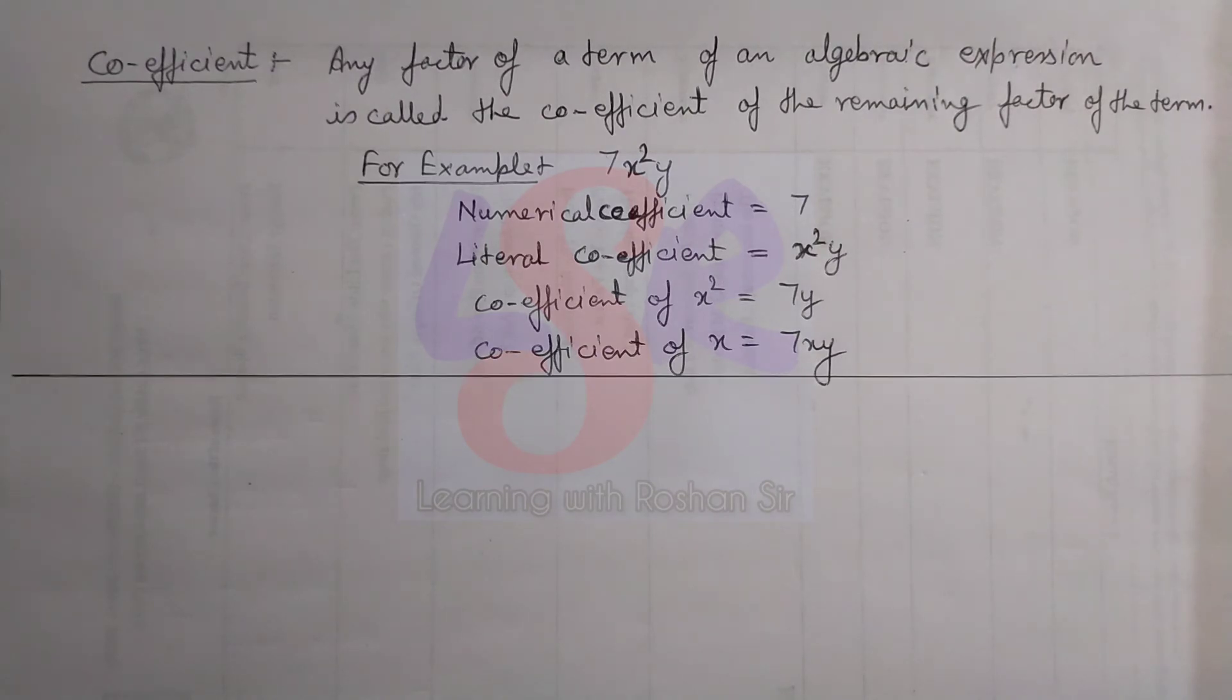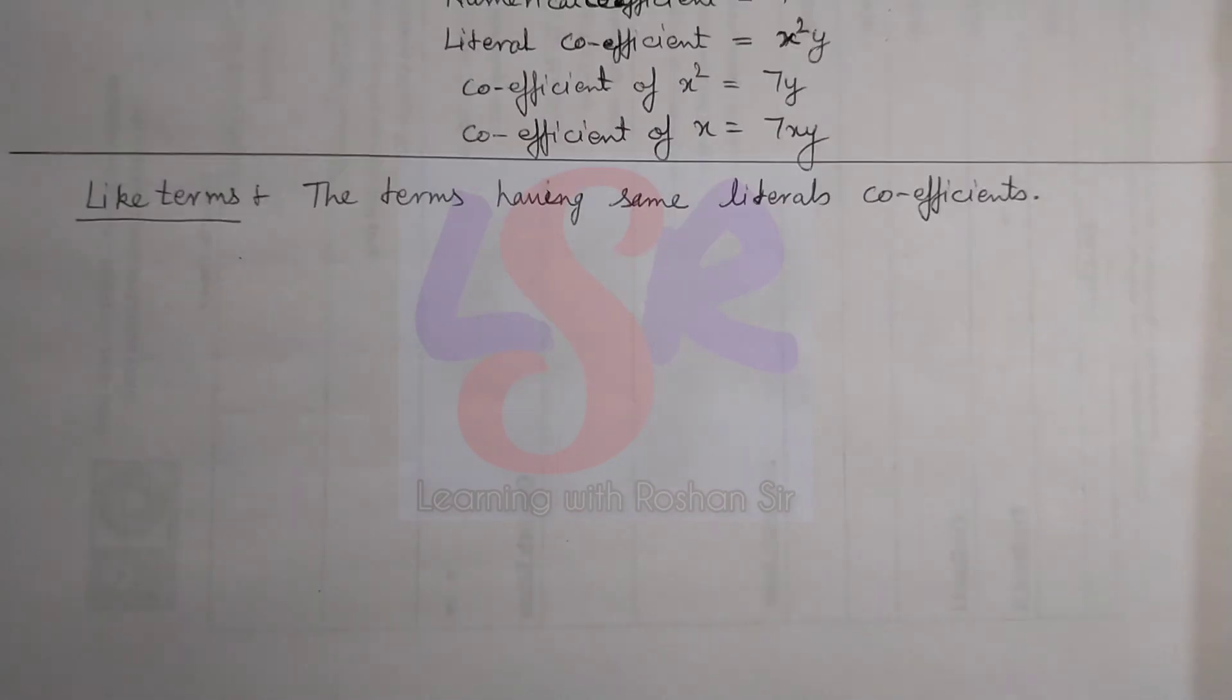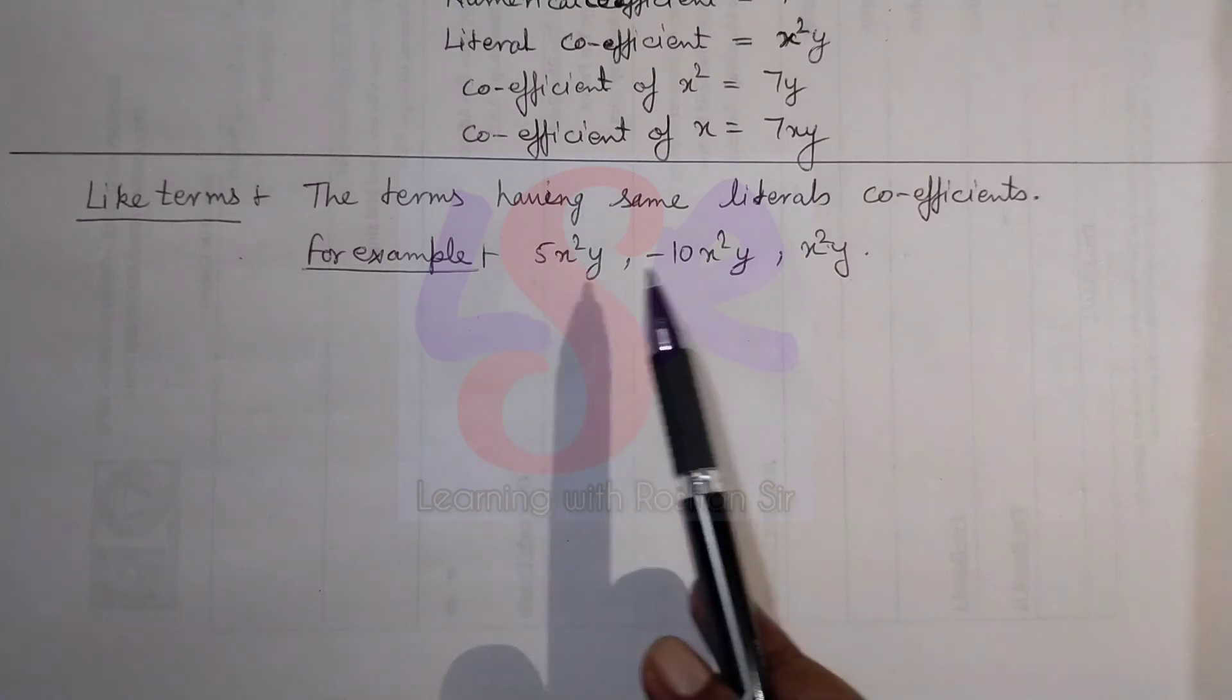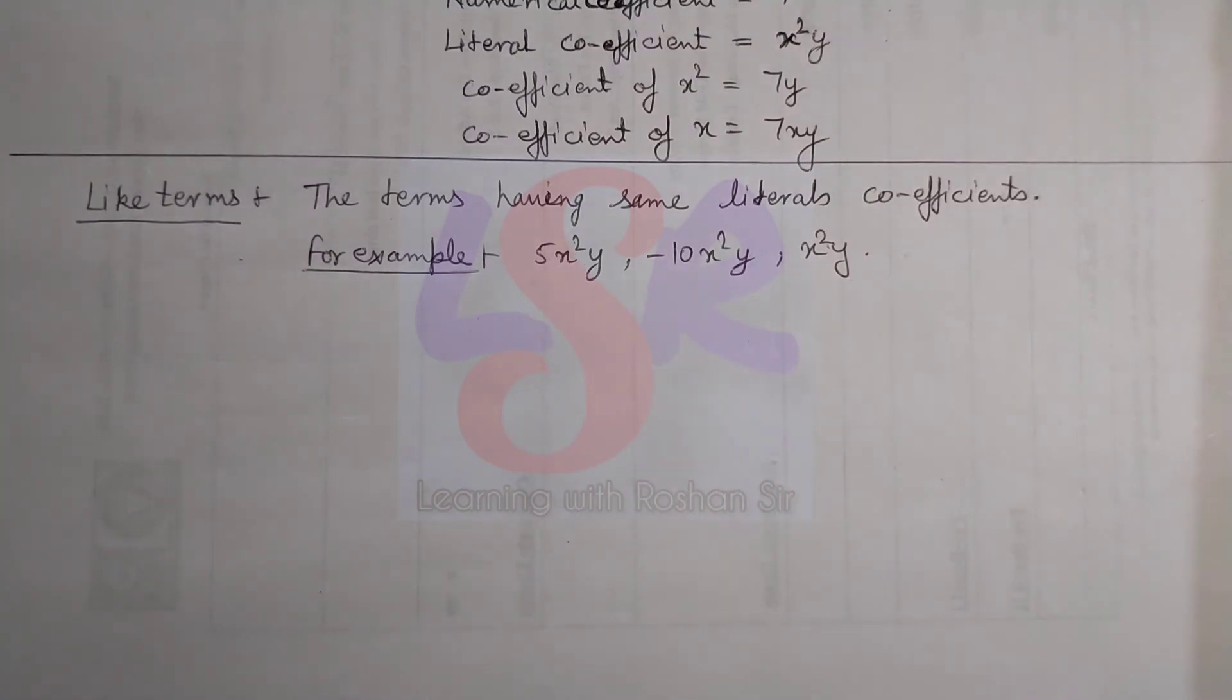Then we have the types of terms. Here we have like terms. Terms having the same literal coefficients. For example, 5x square y, minus 10x square y, and x square y. In all cases we have the same variable, x square y. Hence it is a like term.